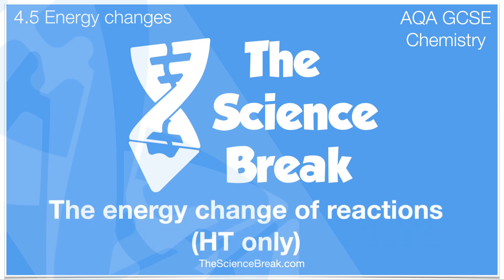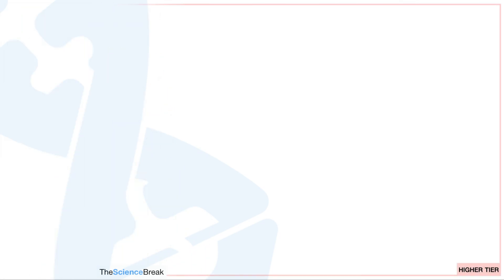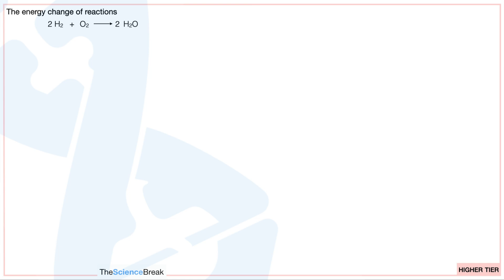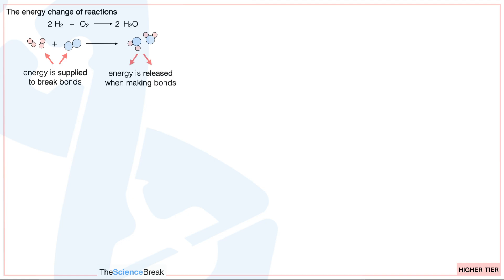The energy change of reactions — this is for the higher tier only. Let's take an example of the reaction of hydrogen with oxygen to form water. To understand what's going on we need to remember that energy is supplied to break the bonds in the molecules of hydrogen and oxygen, and energy is released when making bonds to produce the water molecules. The overall energy change is the energy supplied to break bonds minus the energy released when making bonds.